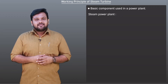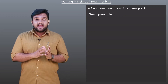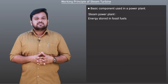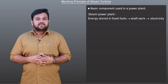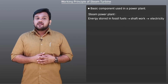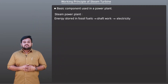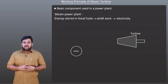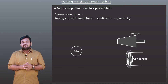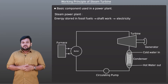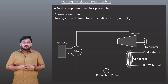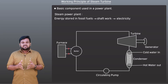A steam power plant continuously converts the energy stored in fossil fuels into shaft work and ultimately into electricity. A steam power plant consists of four basic components: boiler, steam turbine, condenser, and a feed or circulating pump. Heat energy released by the burning of fuel is transferred to the water in the boiler to generate steam.